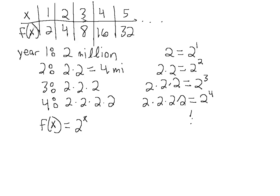Since our number of computers sold each year doubles, we're simply multiplying two times the number of years. In year four, our function is two to the power of four. In the second year, it's two to the power of two. Since x is defined in years, we write our function as f of x equals two to the x. We identified a pattern and came up with a function describing that table of values.